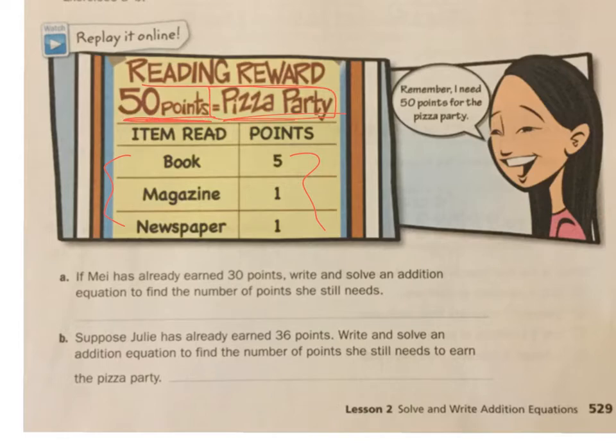And this person over here is saying, remember, I need 50 points for the pizza party. Now, if Maya has already earned 30 points, write and solve an addition equation to find out the number of points she still needs.